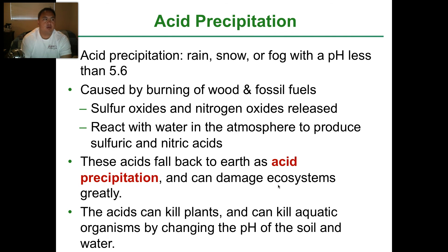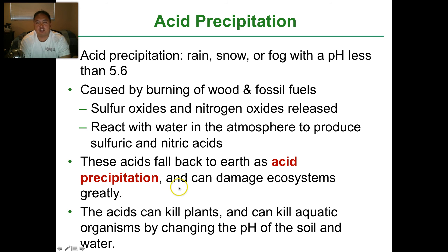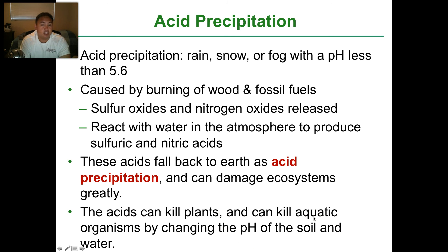We talked about the water cycle already, but what you need to know is particularly how we destroy it — acid rain. If you remember pH, 7 is normal, like water. But if pH is less than 5.6, they call it acid rain or acid precipitation — it could be rain, snow, or fog. The reason we have acid rain is because we burn wood and fossil fuels. The sulfur and nitrogen from wood and fossil fuels mix with the clouds, and we rain acid. They fall back as acid precipitation and damage ecosystems greatly — these acids kill plants and trees, but also run off into lakes and rivers, killing aquatic organisms even more so.